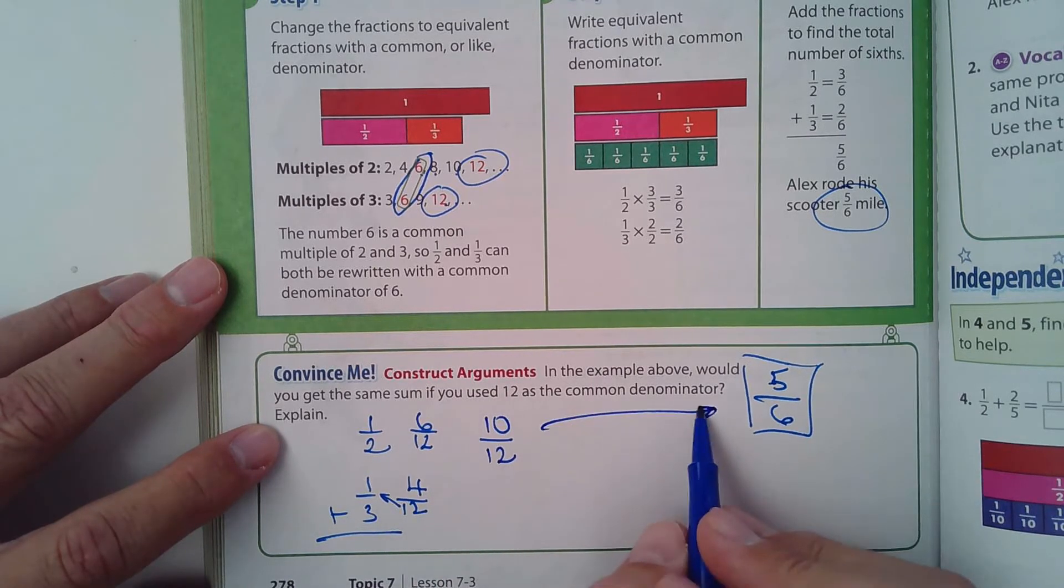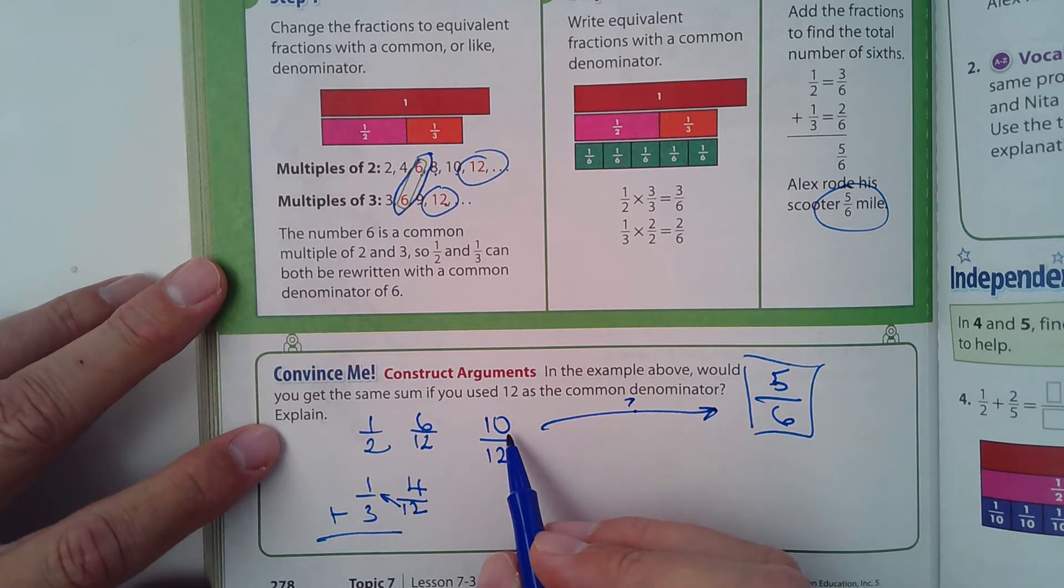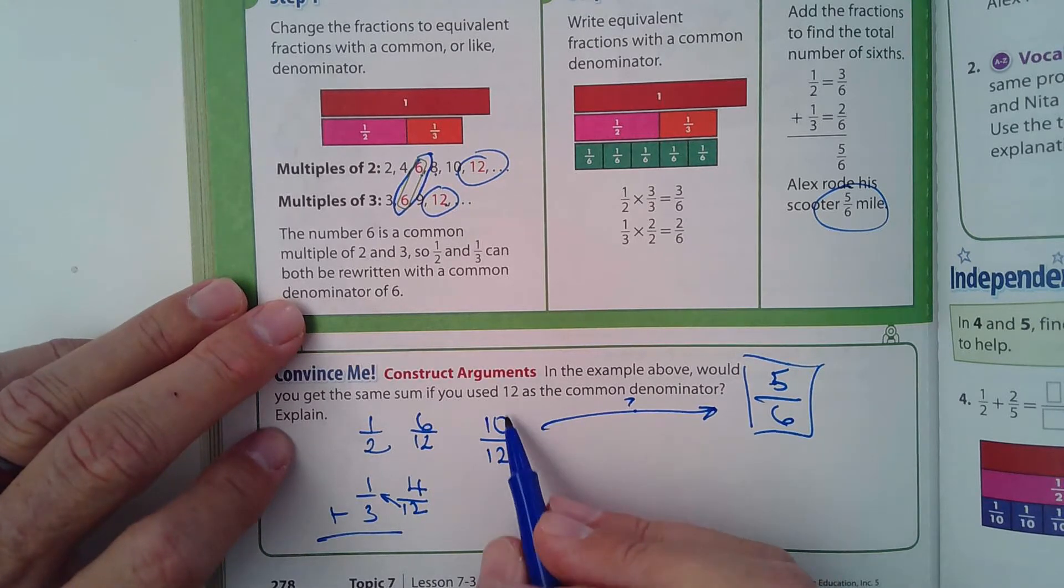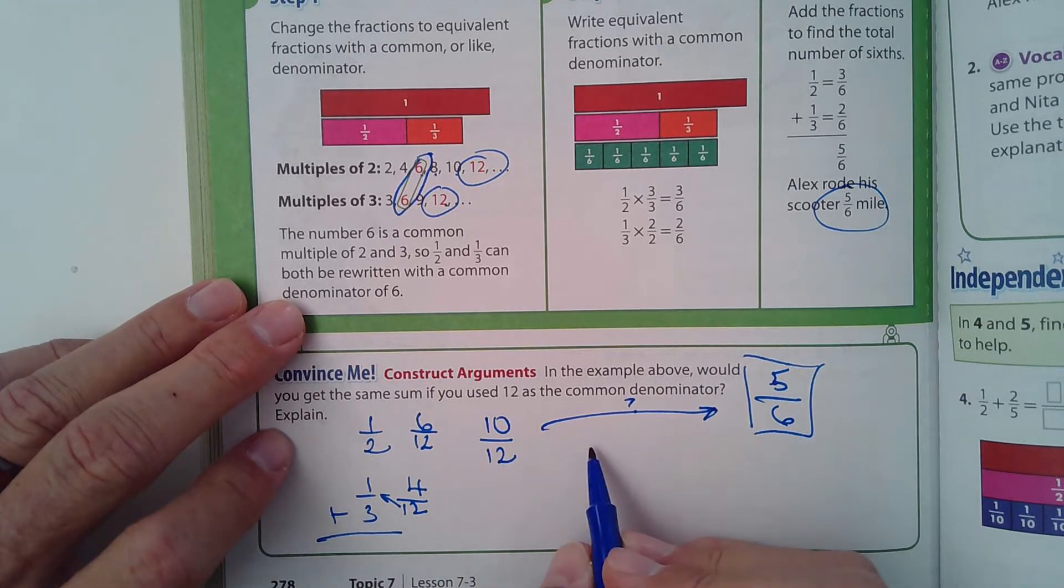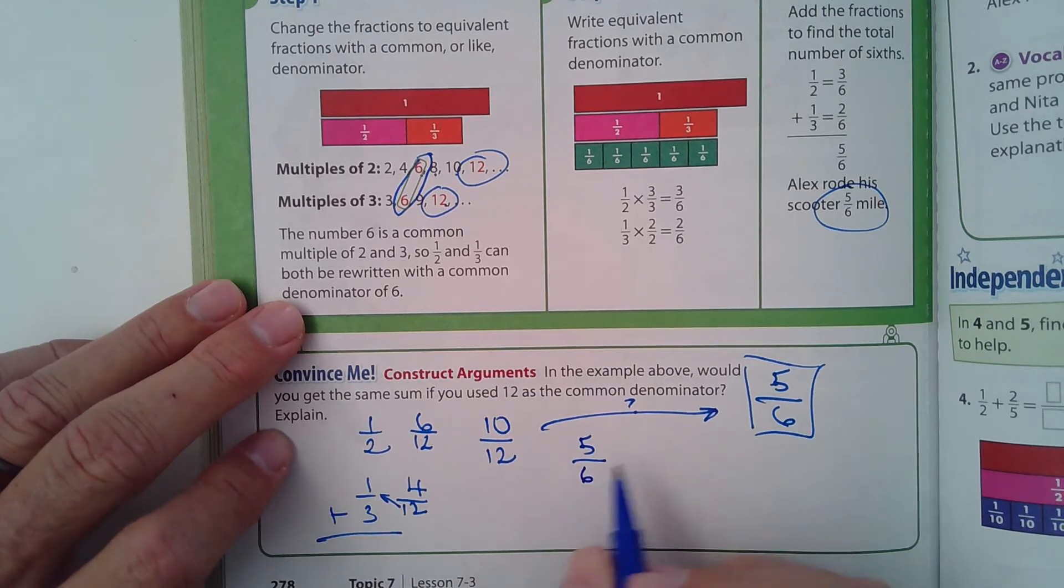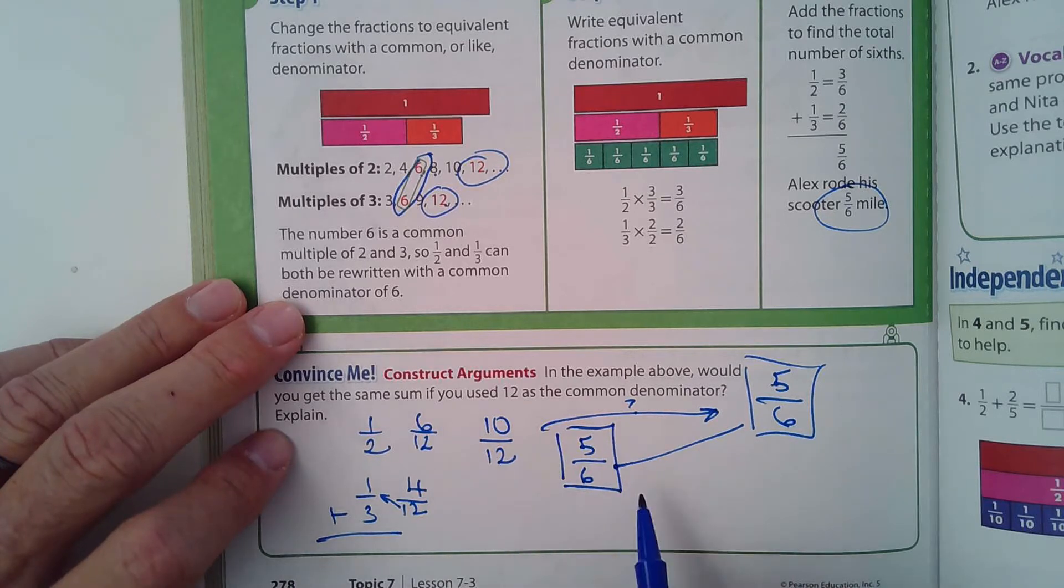So we have 6 over 12 and 4 over 12. You add the numerators, that's the number on top, so it's going to be 10 over 12. We can reduce this, bring it to its simplest terms. Is there a number that will go into 10 and 12? Yeah, 2. How many times does 2 go into 10? Five times. How many times does 2 go into 12? Six times. There you see, we have a match. You get the same answer even if you use a greater common denominator, assuming your math is correct.